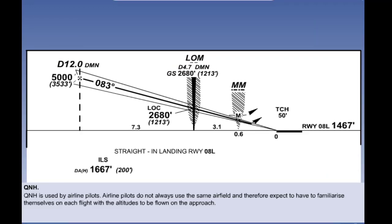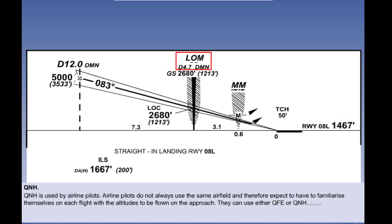Now let's look at the final part of the approach in profile. Here is the final approach fix at 12 miles DME. The required altitude is shown as 5,000 feet QNH, or you could fly a height of 3,533 on QFE. The difference is the elevation of 4,167 feet. As you pass the locator at 4.7 miles DME, you should be at 2,680 feet QNH or 1,213 feet QFE. When we get to the middle marker, we should be 0.6 of a mile from the runway. This is the warning that we are very close to our decision point, which can either be given as a decision altitude or as a decision height.